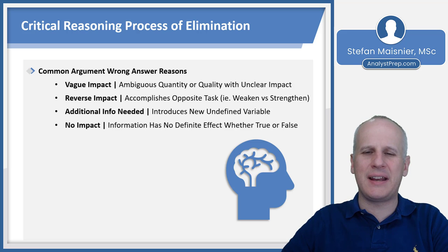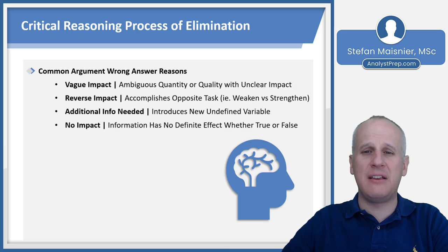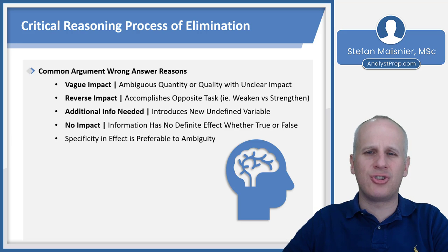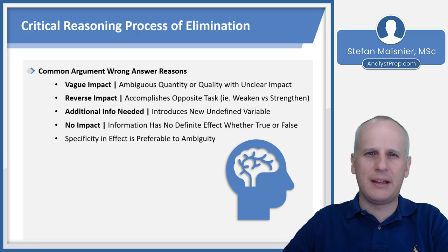You'll also encounter answer choices that need additional information because they introduce some undefined variable with an unclear impact on the conclusion. And lastly, there are answer choices that definitively have no impact either way, whether true or false — you have to consider both directions to make sure you don't fall for traps that seem out of scope but are actually relevant when applied thoughtfully. In general, specificity in a choice can indicate it's likely correct, because when it's surprisingly specific, that can be how the answer tactfully and directly affects the argument, whether it's strengthen, weaken, identify a flaw, or identify an assumption.